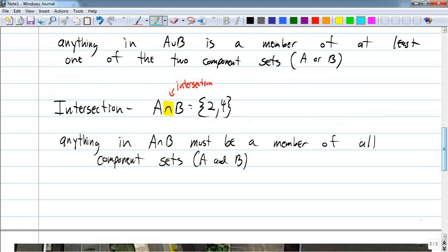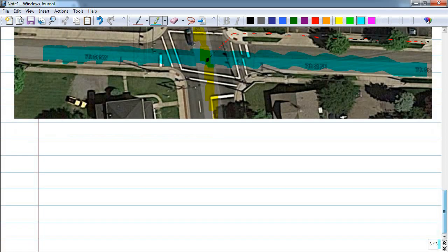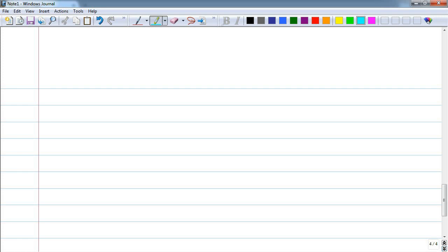Now the application of these two ideas to intervals is important, so let's take a look at three different intervals. Let's take a look at interval C, which is [-2, 4]; interval D, which is (1, 7); and interval E, which is (3, ∞).